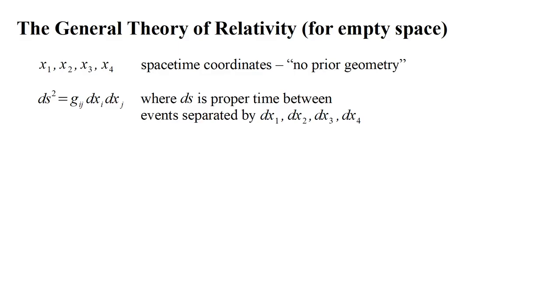At the heart of relativity is the metric tensor, Gij, a four-by-four array of quantities that allows us to calculate the proper time, ds, between events separated by coordinate changes, dx one, two, three, and four.